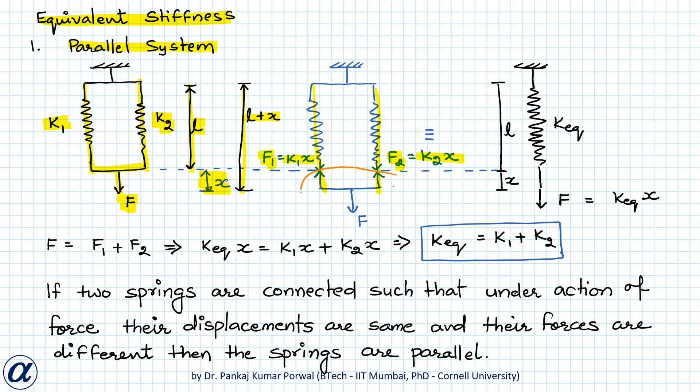Now if I consider equilibrium of this segment of the spring then I will get F equals to F1 plus F2. And if I denote the equivalent of my original system by a single equivalent spring whose stiffness is k equivalent, the length is L, and if I displace that with application of force F then F should be equals to k equivalent into x.